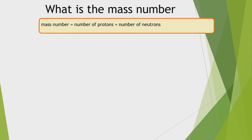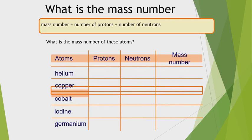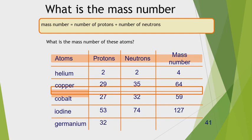The mass number equals the number of protons plus neutrons in an atom. For helium with 2 protons and 2 neutrons, mass number = 4. Copper with 29 protons and 35 neutrons gives mass number 64. Cobalt with 27 protons and 32 neutrons gives 59. Iodine with 53 protons and 74 neutrons gives 127. Germanium with 32 protons and 41 neutrons gives 73.